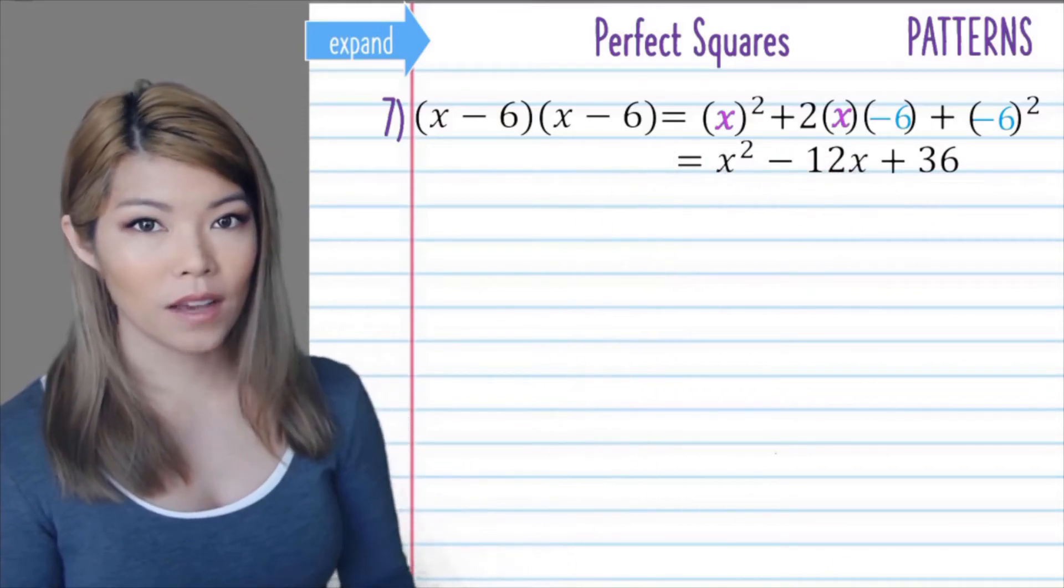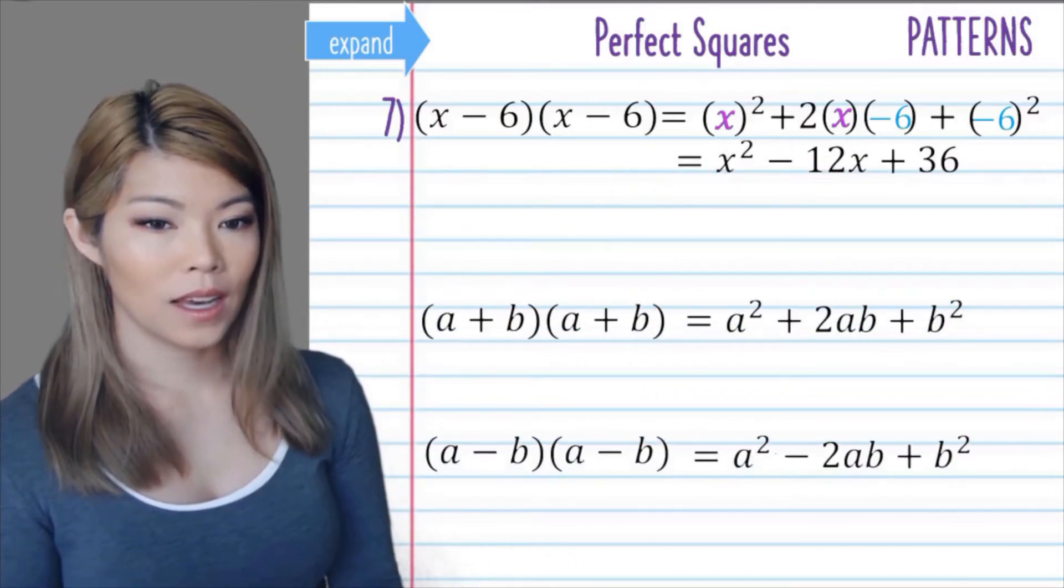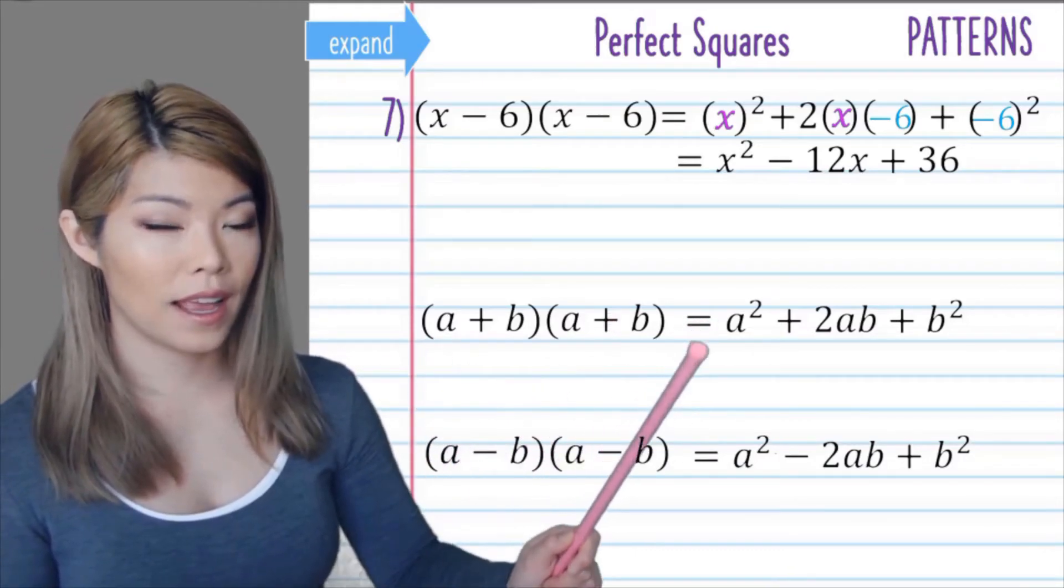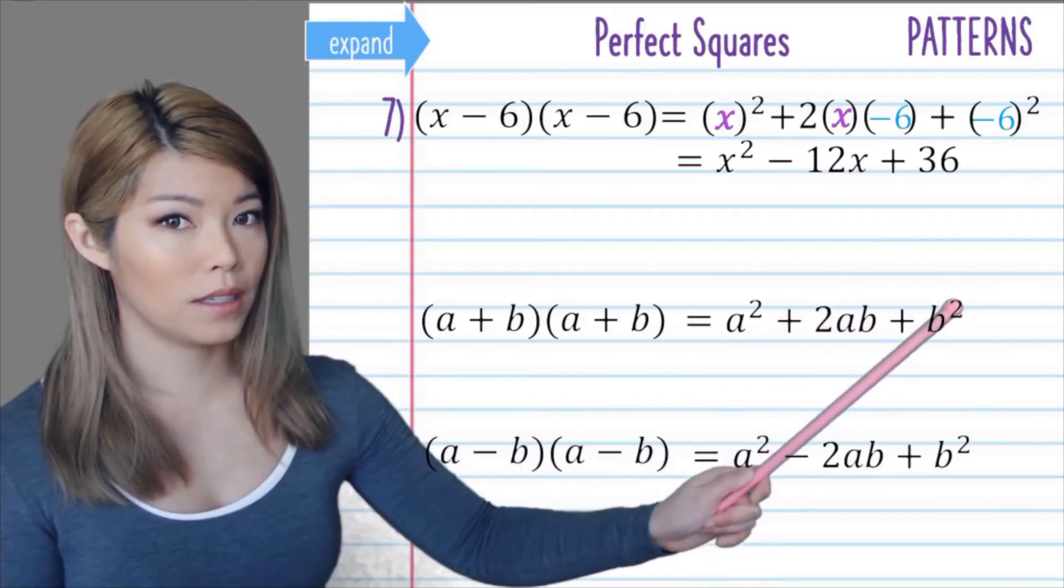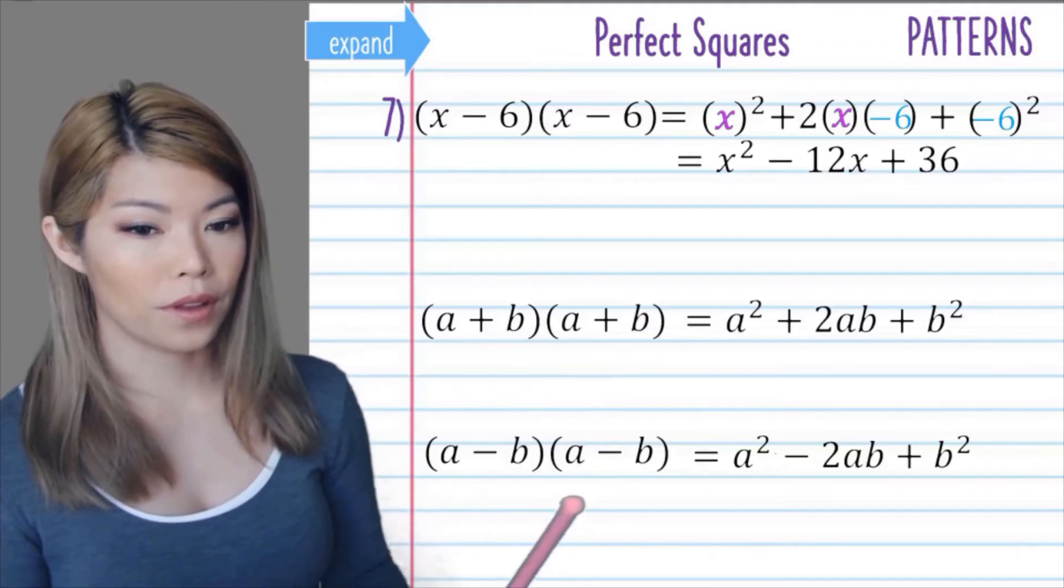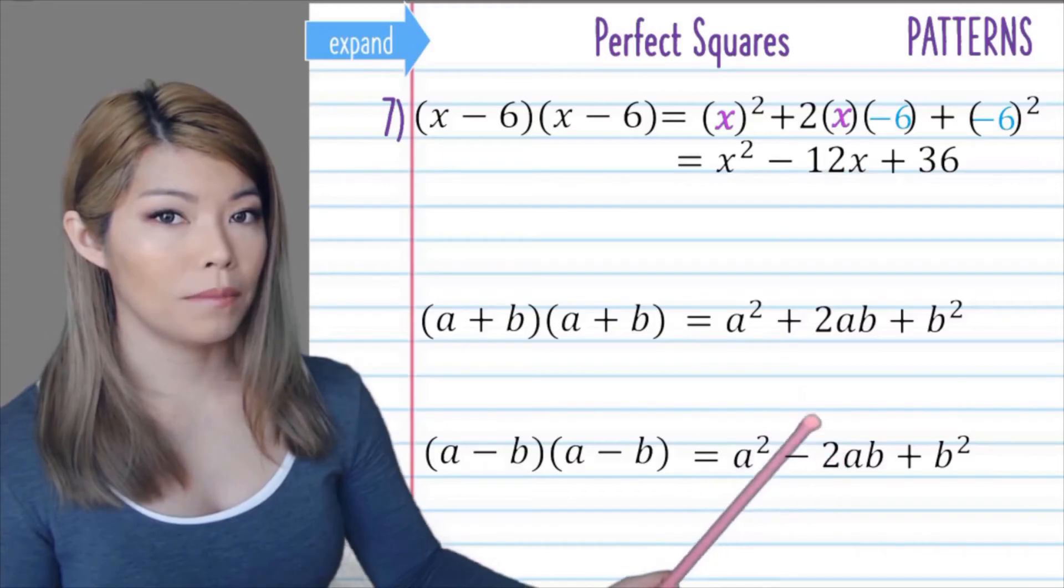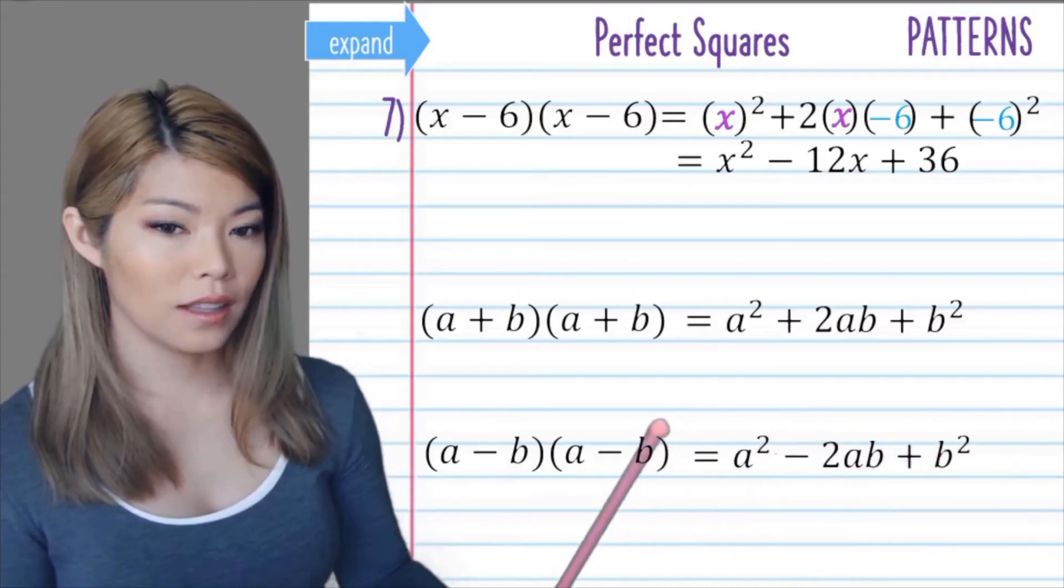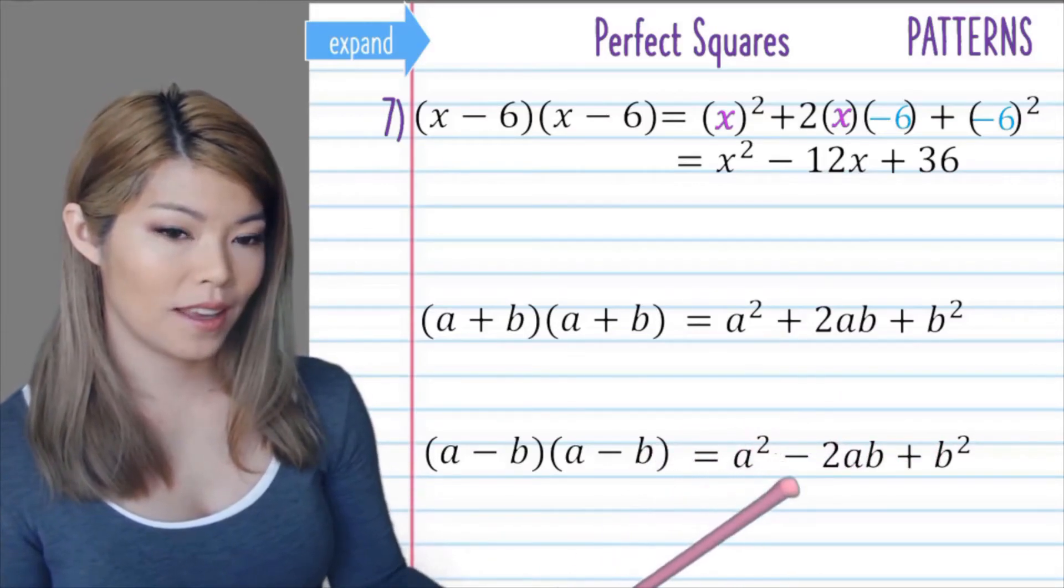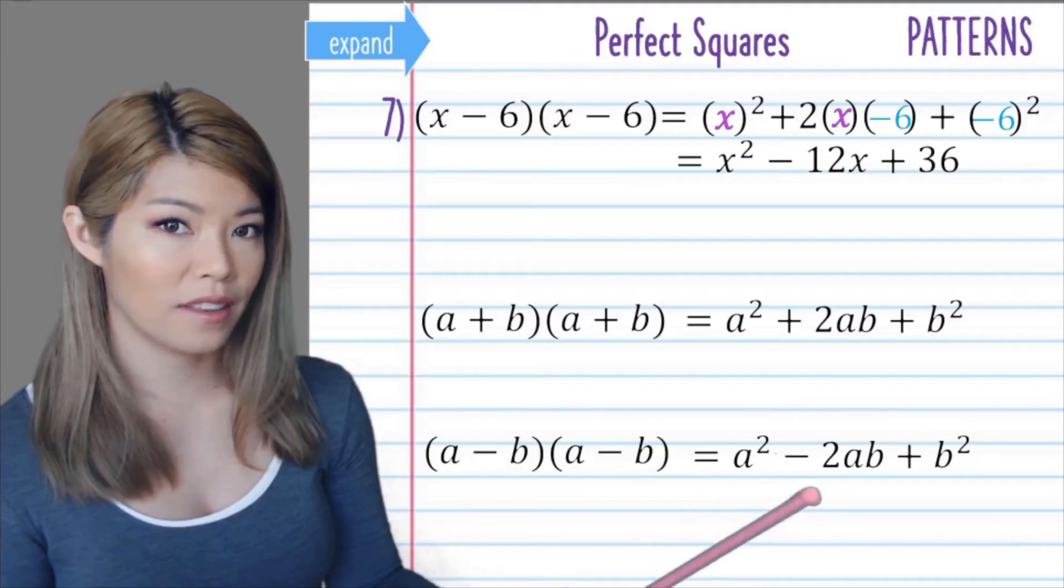Let's have a look at the formulas again. When we have both positive factors, we have a squared plus 2ab plus b squared. When we have both negative, we have a squared minus 2ab plus b squared. So the only difference is this minus over here. The middle terms are both negative.